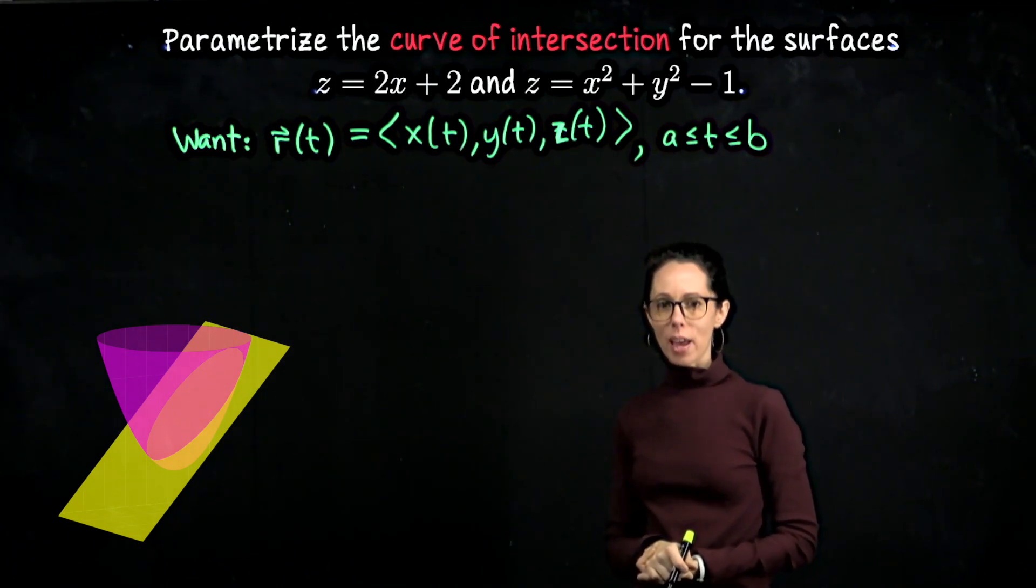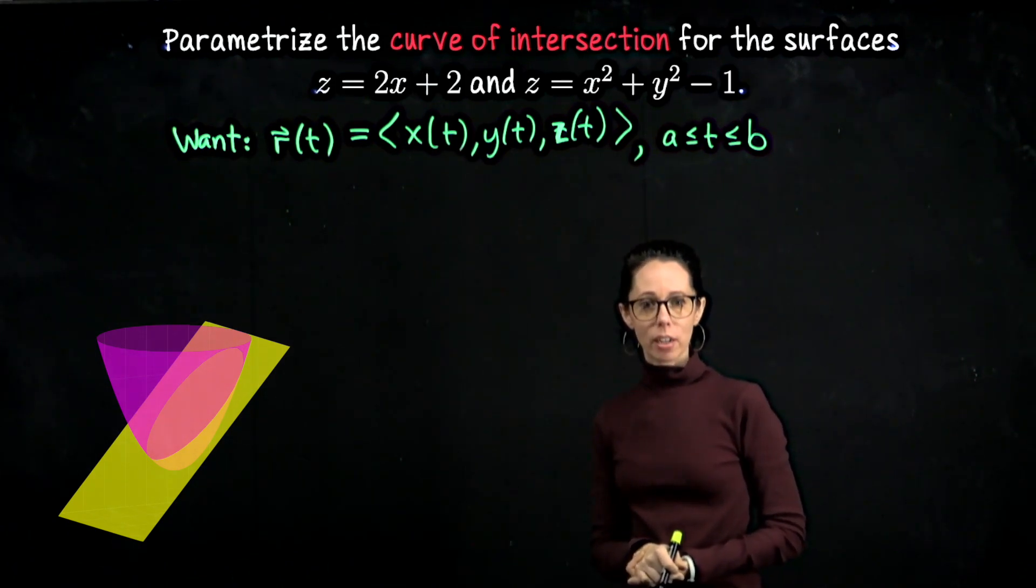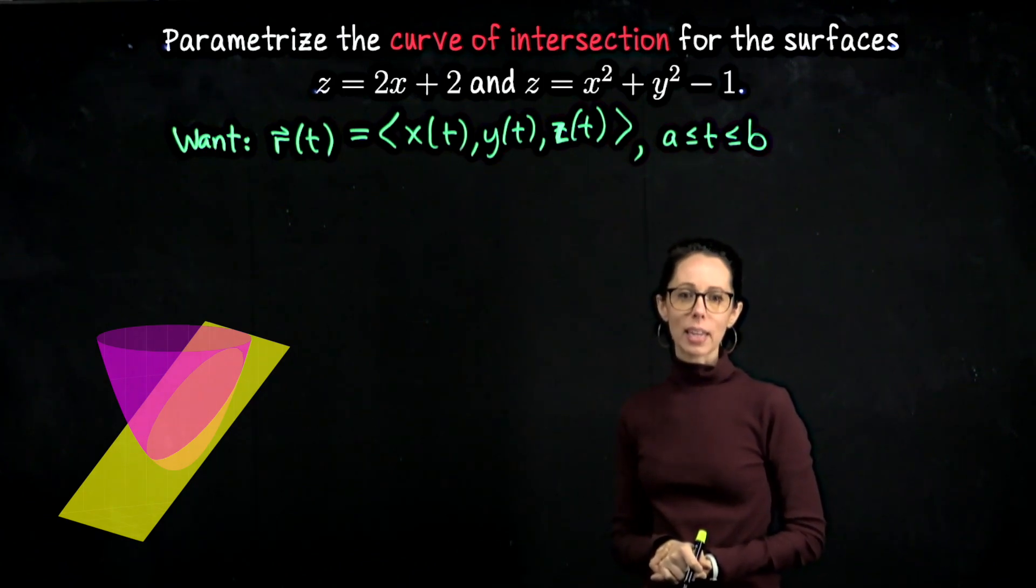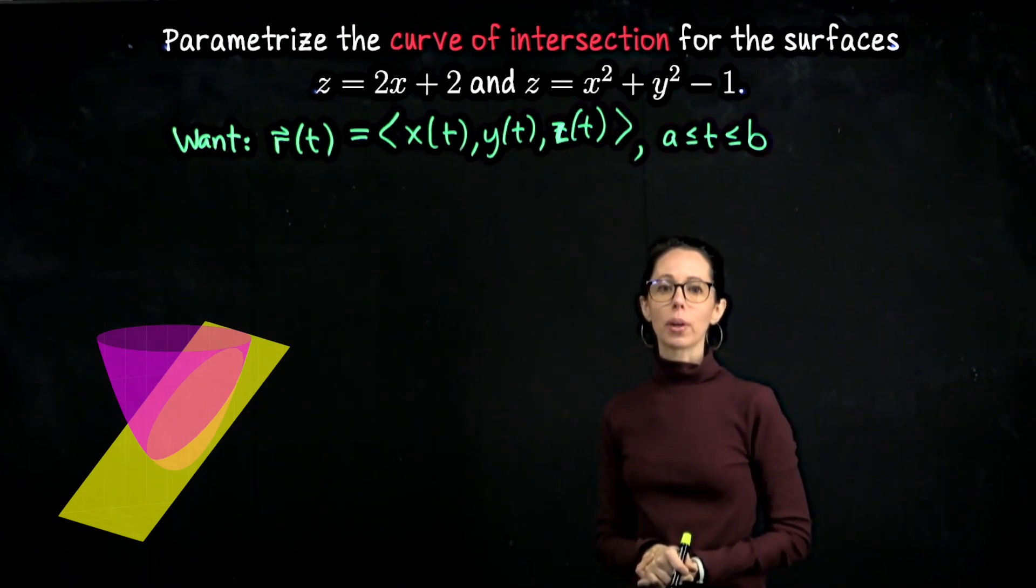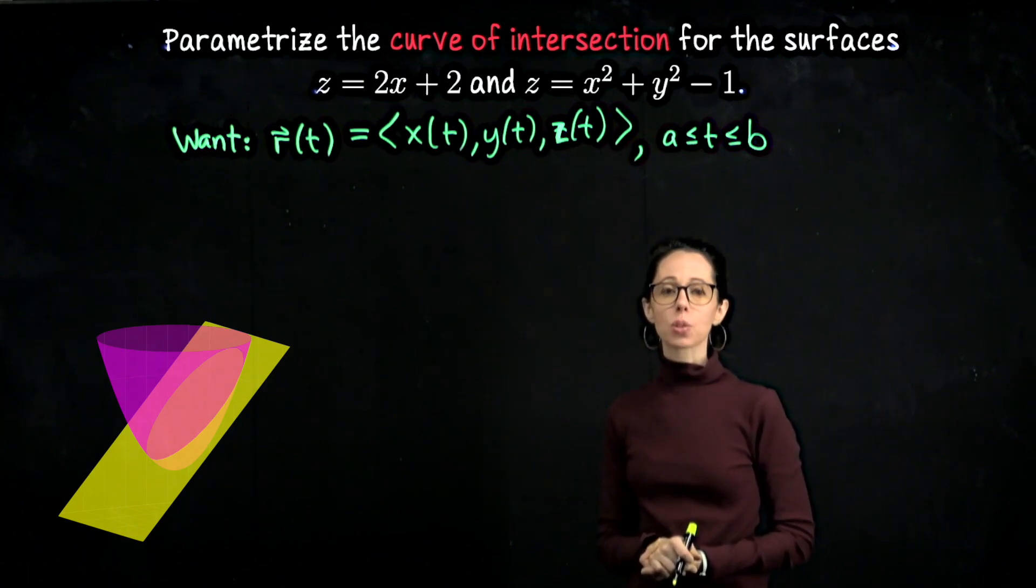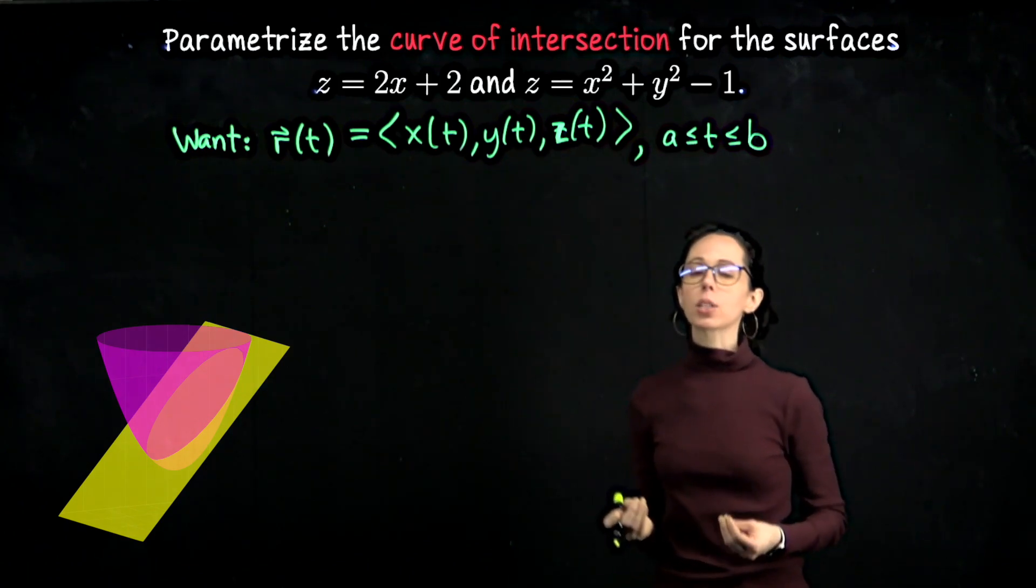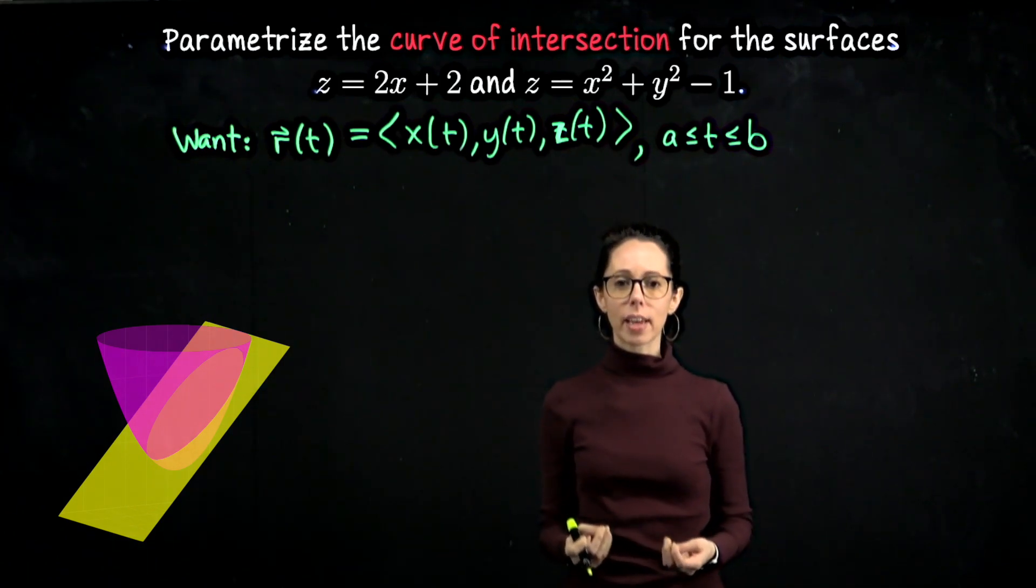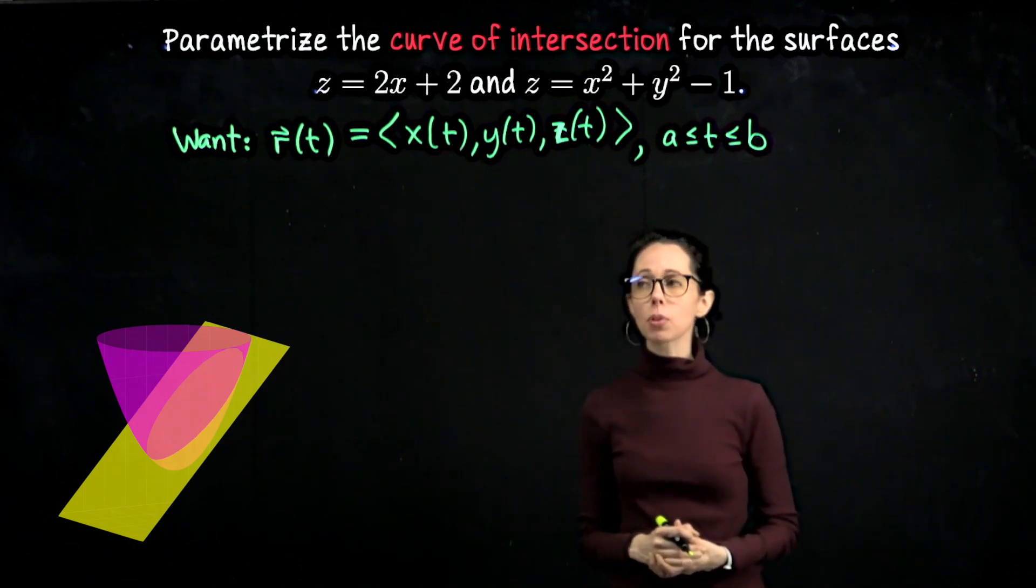This curve we want to describe is a curve of intersection, which means it both lives on the plane z equals 2x plus 2 and on the paraboloid z equals x squared plus y squared minus 1. So any triple x, y, and z on that curve of intersection must make both equations simultaneously true.